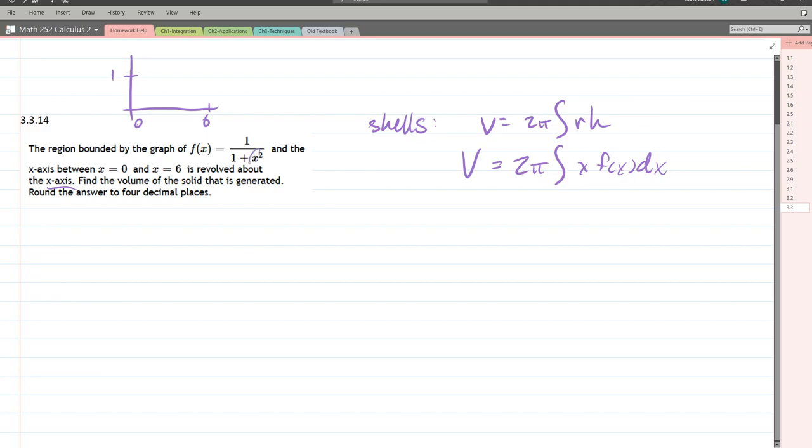Now, as x gets bigger, what happens to x squared? x squared gets bigger, which makes the whole fraction get very small. Now, if you plug in 6, you will get 1 over 1 plus 6 squared, or 1 over 36 plus 1, 1 over 37, which is very, very small.